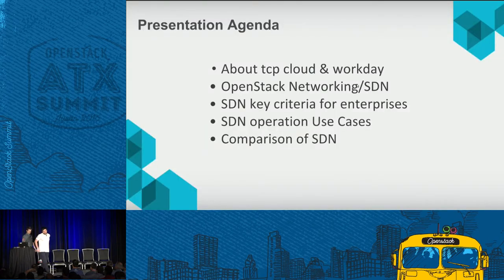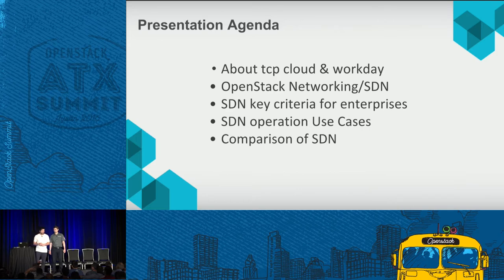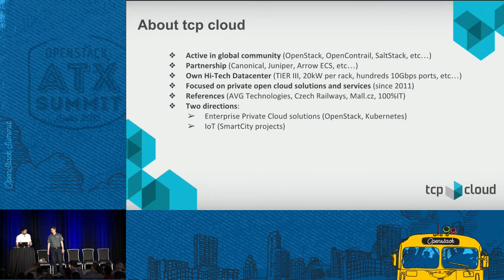The agenda: first, something about TCP Cloud — what the company is and what we are doing. Then something about OpenStack networking key points, the criteria for enterprises because we have more than 15 or 20 enterprise customers with different needs. Then use cases, and finally a small personal comparison of SDNs.